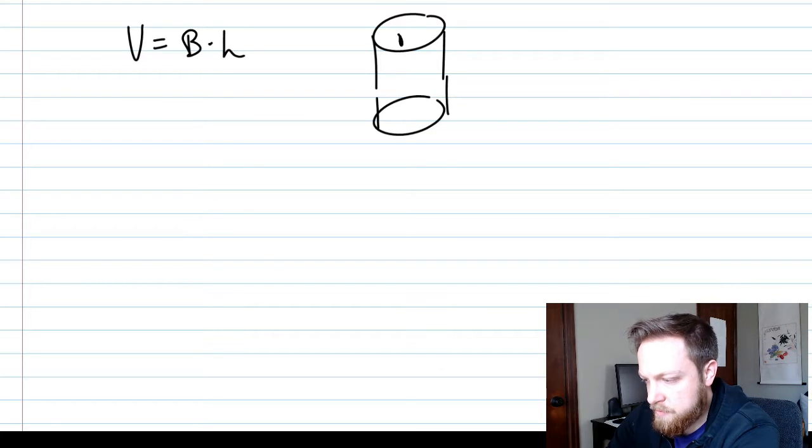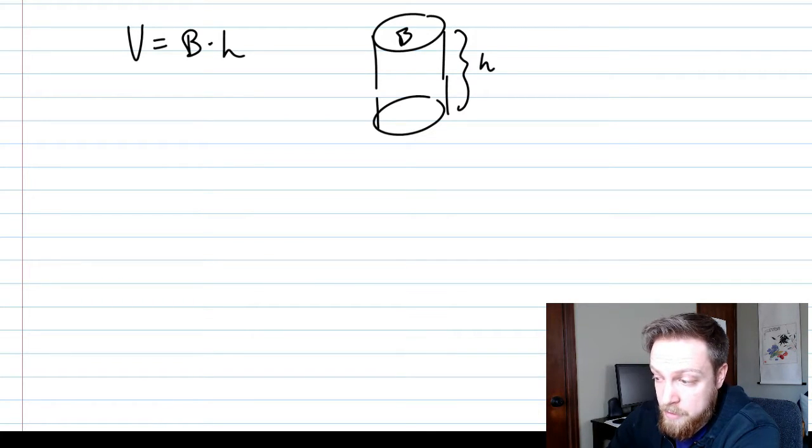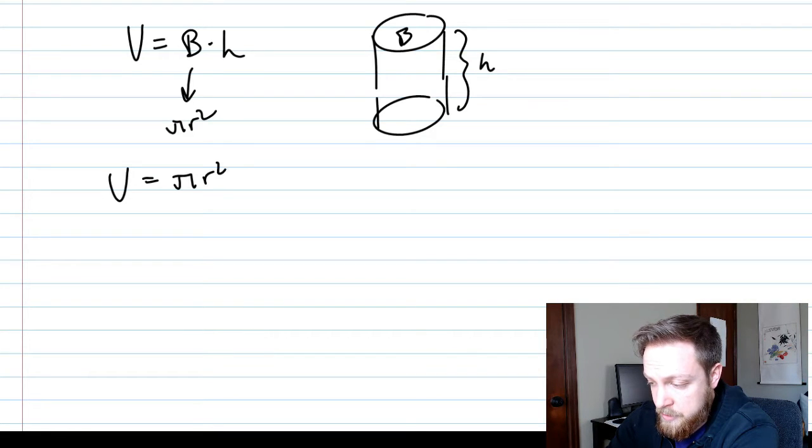Okay, so this is my big B, and this right here is my H. If you know anything about circles, the area of your big base is pi r squared. So what we're really doing is pi r squared times H.